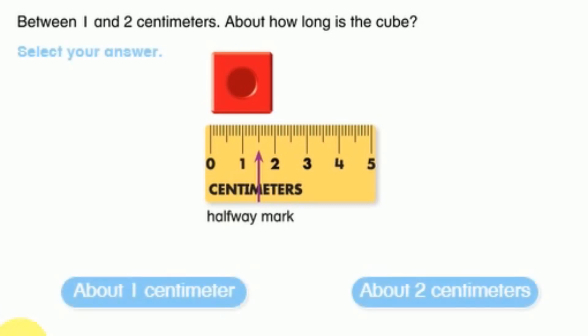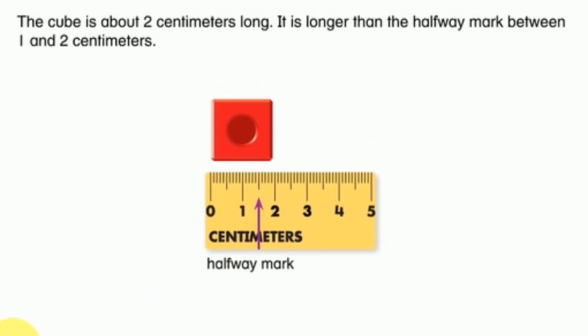Between one and two centimeters. About how long is the cube? Select your answer. The cube is about two centimeters long. It is longer than the halfway mark between one and two centimeters.